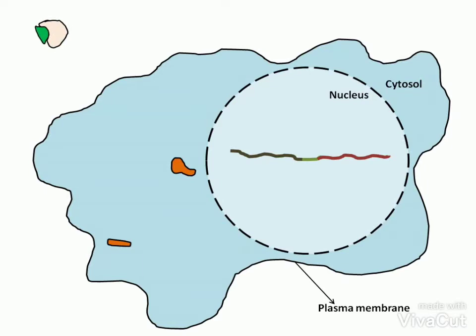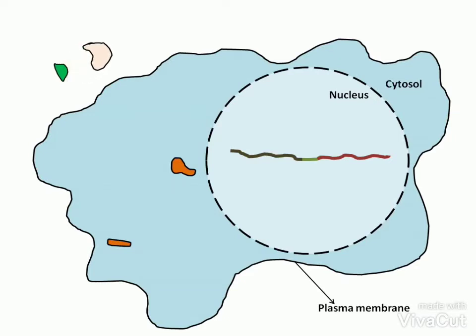This serum binding protein with bound hormones delivers the hormone near the plasma membrane. The hormone then passes through the plasma membrane by simple diffusion.